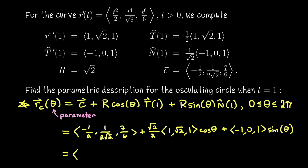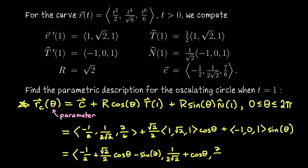Putting it all together: the x-coordinate is -1/2 + (√2/2)cos(θ) - sin(θ); the y-component is 1/(2√2) + cos(θ) (since √2/2 · √2 = 1) plus 0; and the z-component is 7/6 + (√2/2)cos(θ) + sin(θ). Let me switch over to a movie now where we will see the unit tangent and normal vectors — I'll also put the binormal vector there — and we will identify the osculating plane, radius, center, and osculating circle. After the movie I'm going to show you why this formula is what it is.